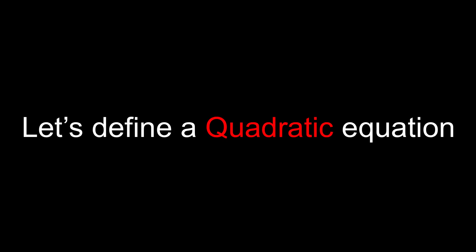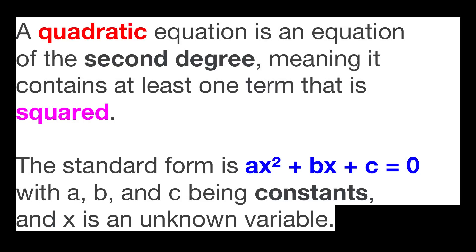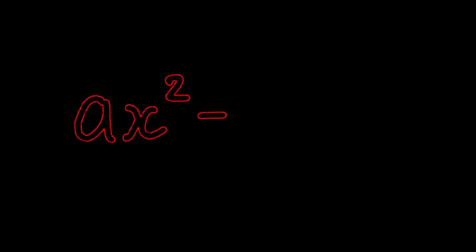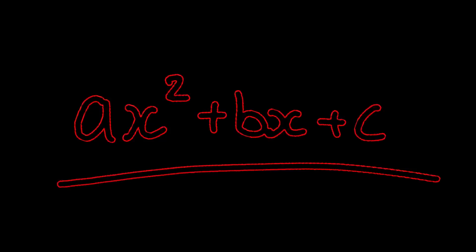Before we get started, let's define a quadratic equation. A quadratic equation is an equation of the second degree, meaning it contains at least one term that is squared. The standard form is ax squared plus bx plus c equals zero, with a, b, and c being constants, and x is the unknown variable. So we're going to be using this format — ax squared plus bx plus c — to solve our quadratic sequence.